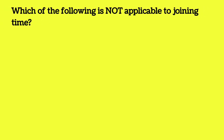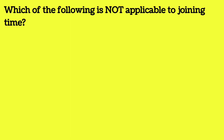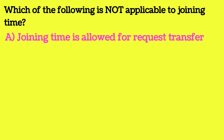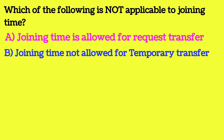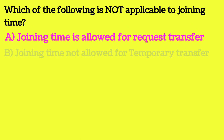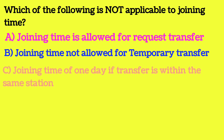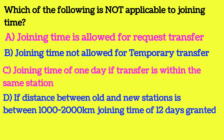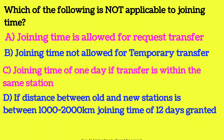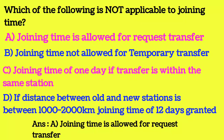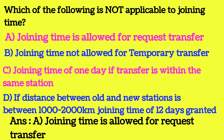Which of the following is not applicable to joining time? Option A: joining time is allowed for request transfer. Option B: joining time not allowed for temporary transfer. Option C: joining time of 1 day if transfer is within the same station. Option D: if distance between old and new stations is between 1000 to 2000 km, joining time of 12 days is granted. Option A is incorrect — in the case of a request transfer, no joining time will be allowed.